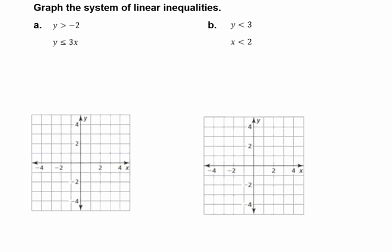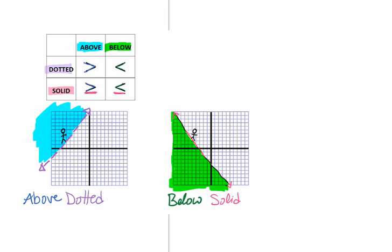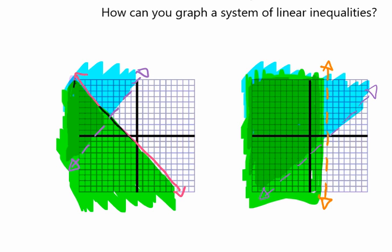Here we have systems of inequalities. From an earlier video, we talked about how to graph a single linear inequality based on our symbol — whether it was greater than or less than, or greater than or equal to or less than or equal to — and which of those would give us a dotted line versus a solid line, and where we would shade above and where we would shade below. When we have a system of two or more inequalities, we're going to have two sets of lines and two sets of shading, and our answer will be where both of the shadings overlap.